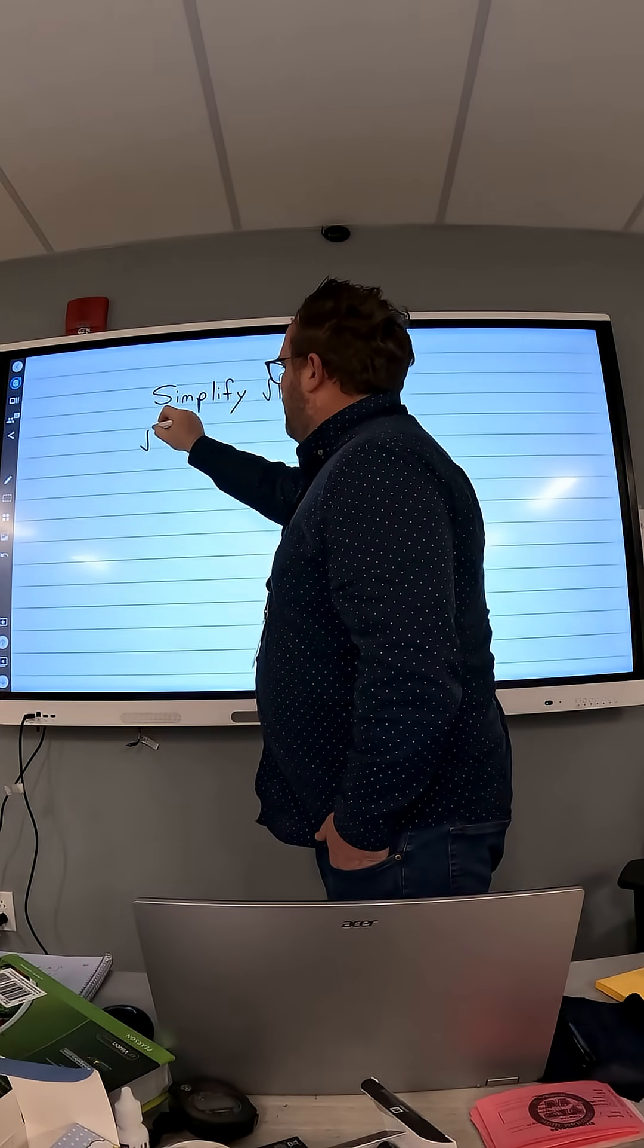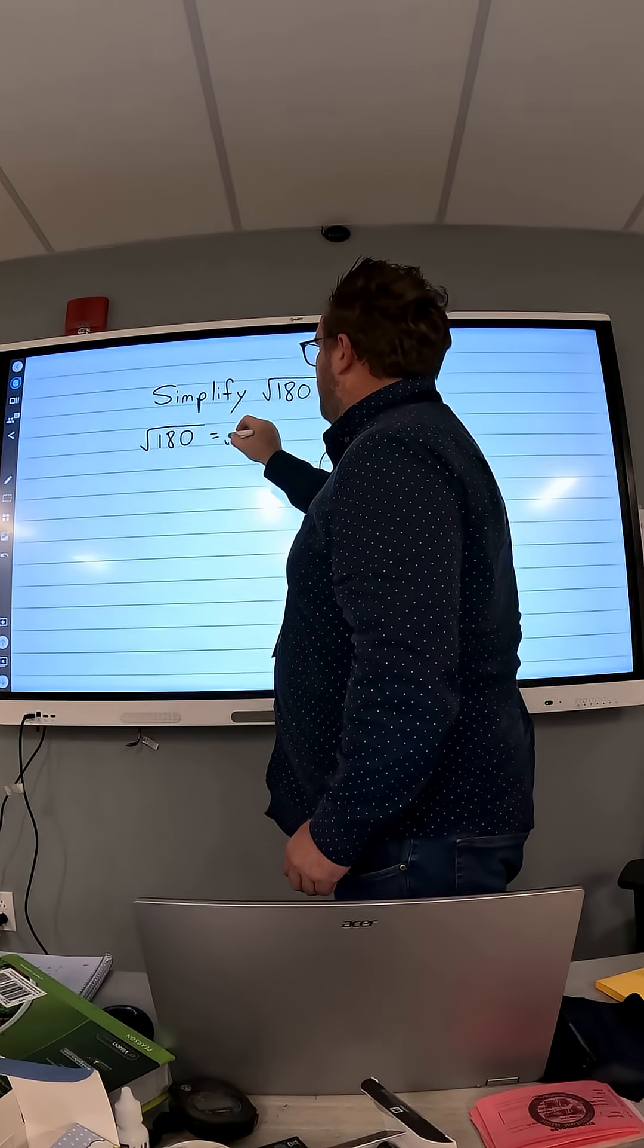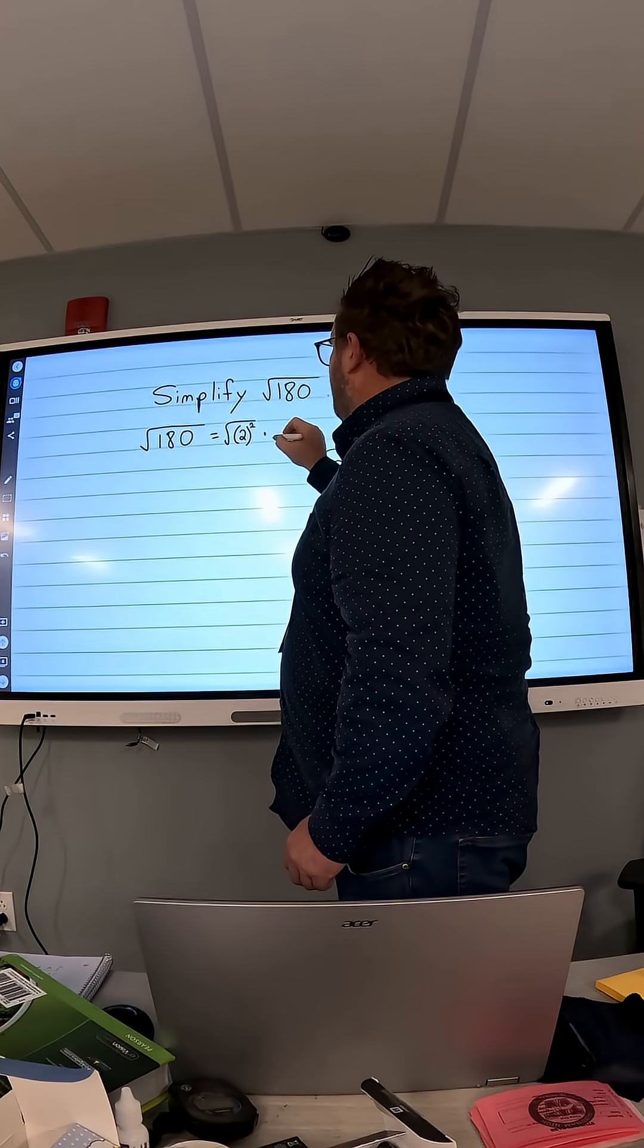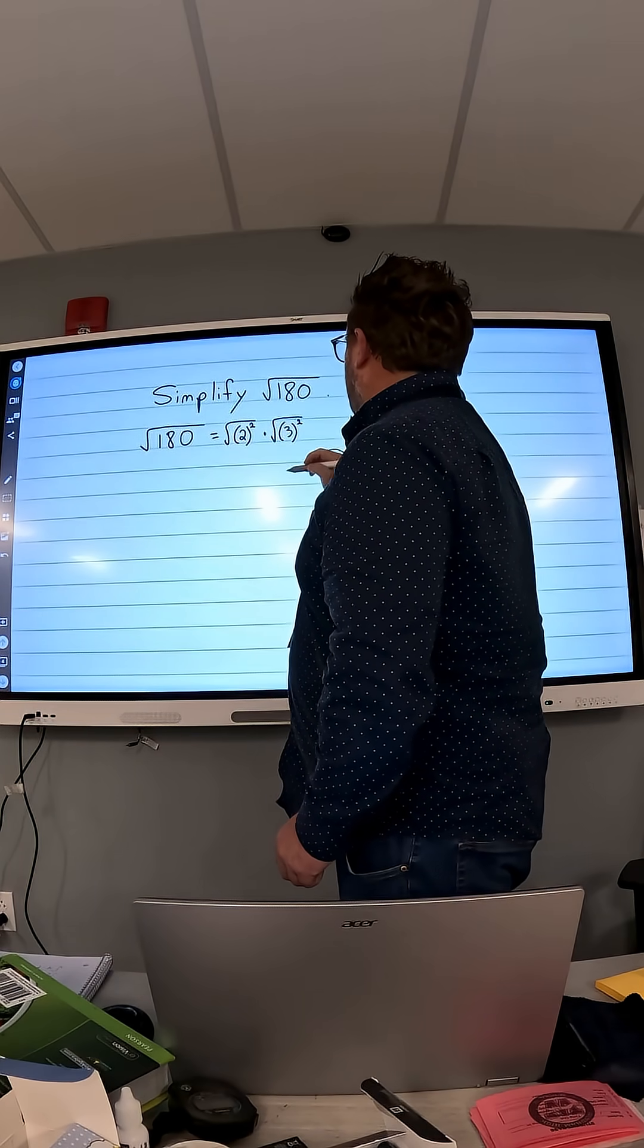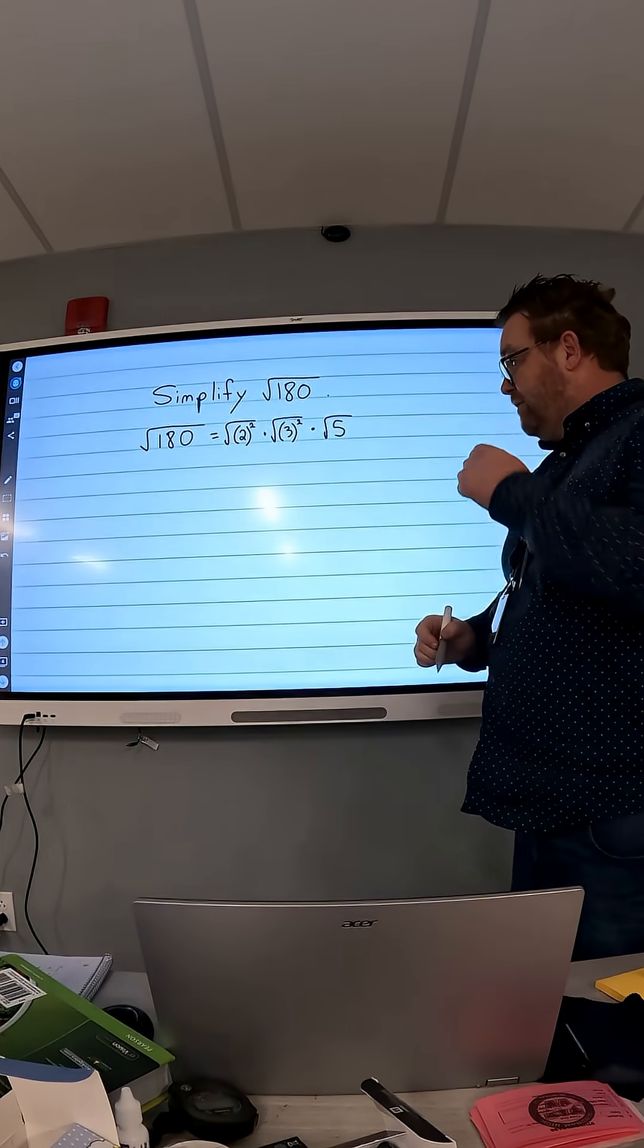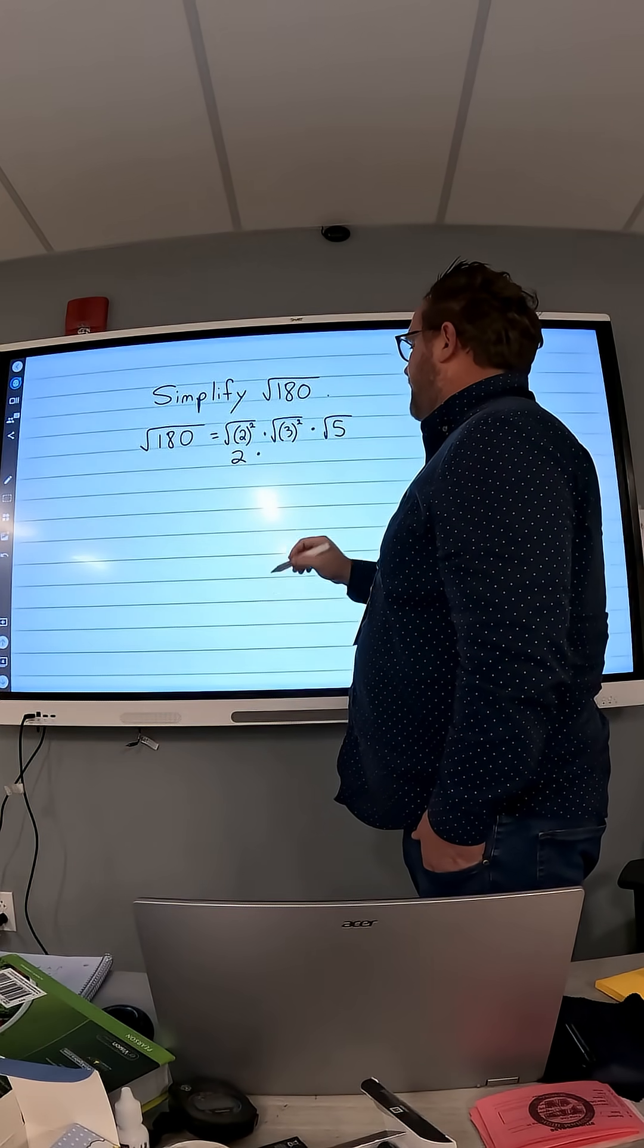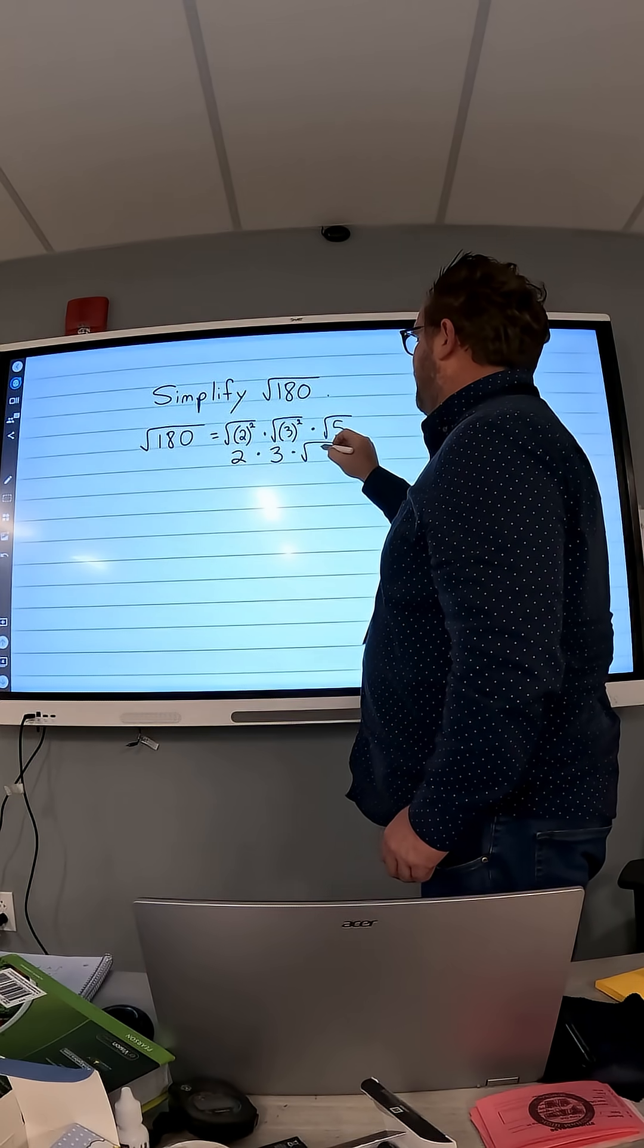So I can break this square root of 180 into the square root of 2 squared times the square root of 3 squared. So 2 times 3 is 6 times the square root of 5. So the square root of 2 squared is 2. The square root of 3 squared is 3. And then we have the square root of 5.